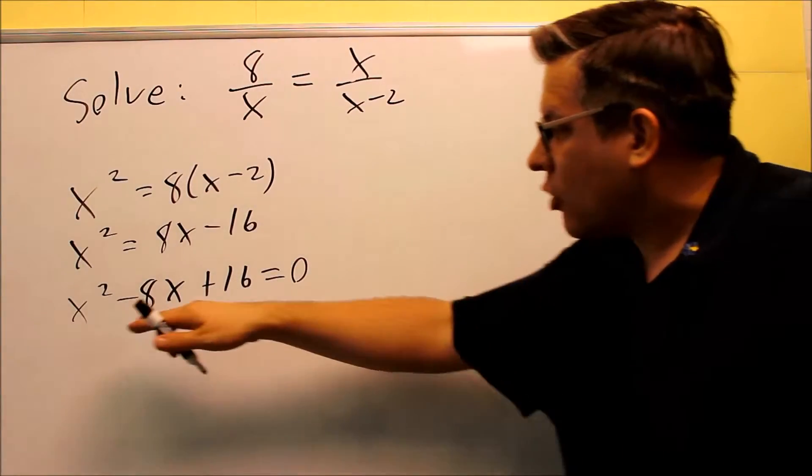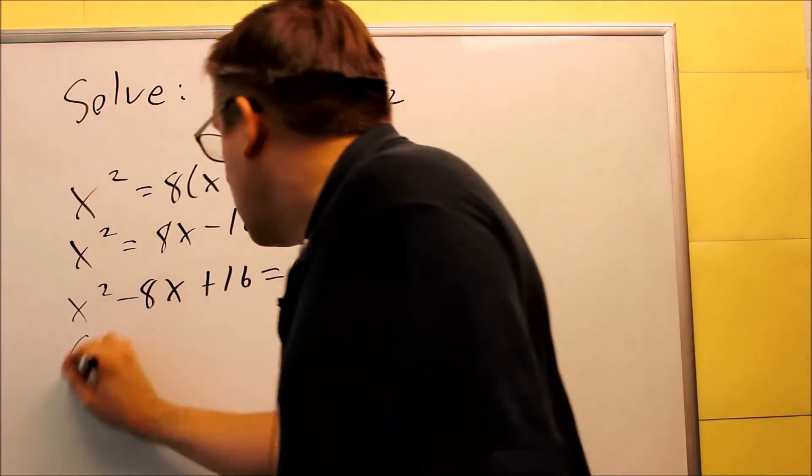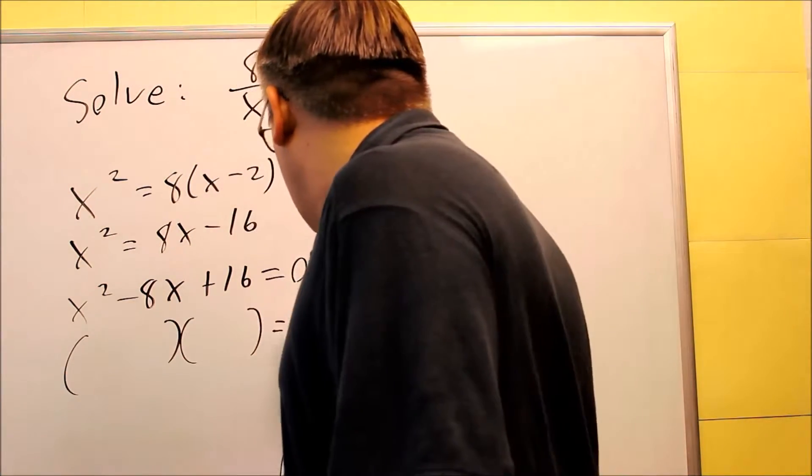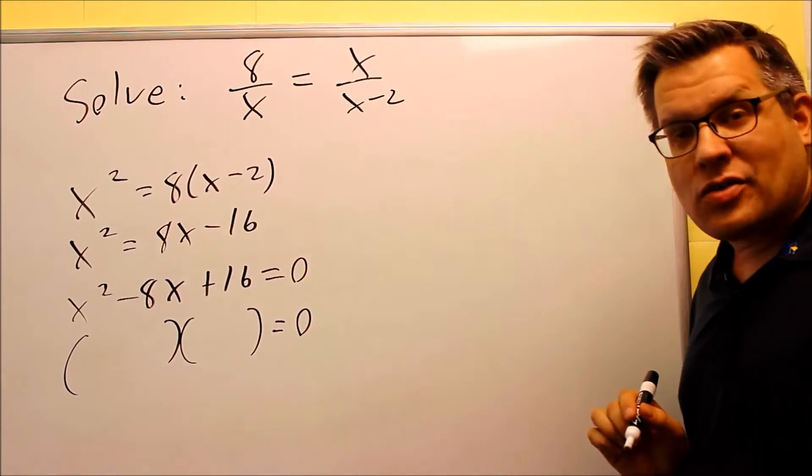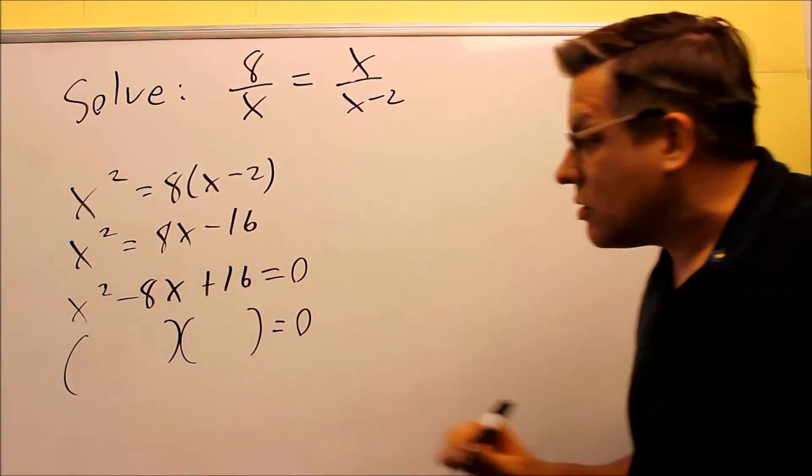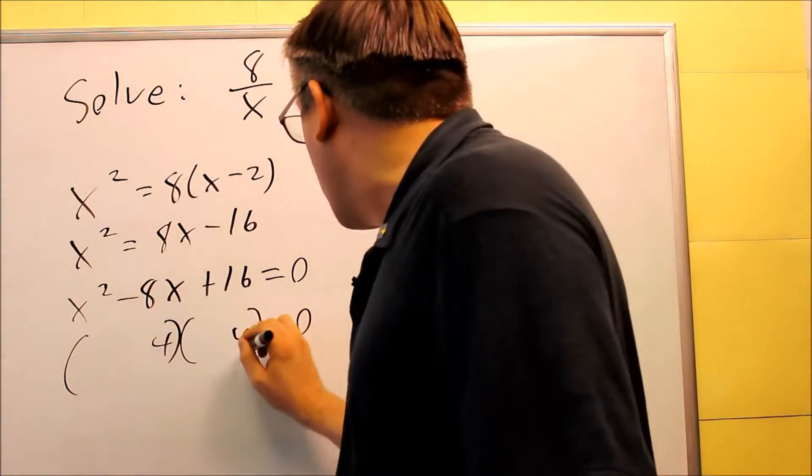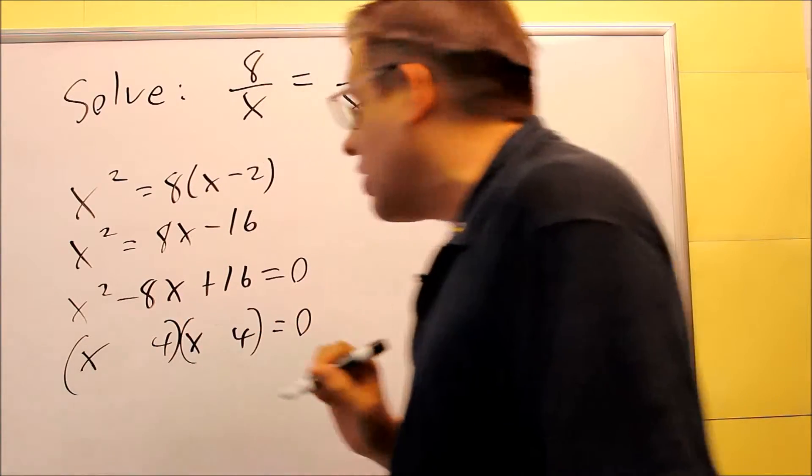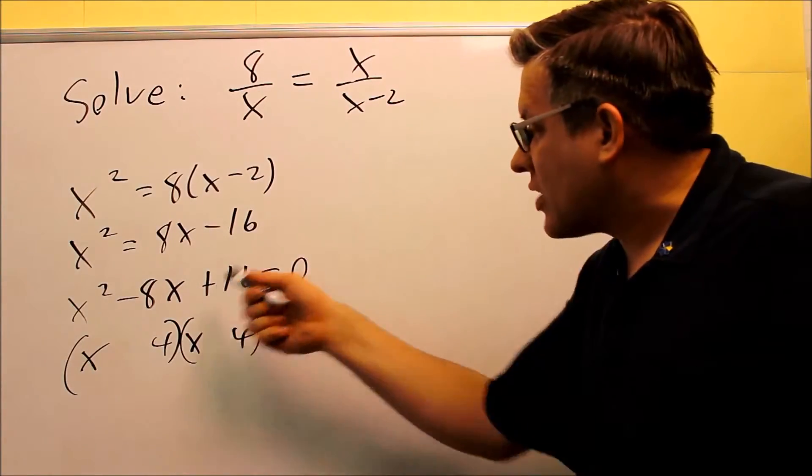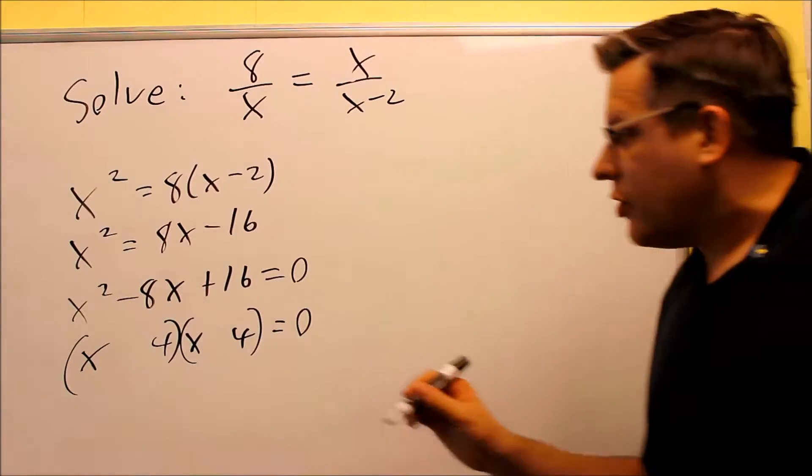And now once you have a quadratic set equal to 0, we're going to do factoring. And two numbers that multiply to make 16 and add to be negative 8. We're going to do 4 and 4. We know we have to have X and X here to get the X squared. And then if it's plus on the end, they're either both positive or both negative.